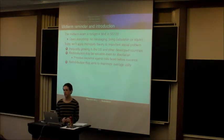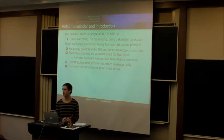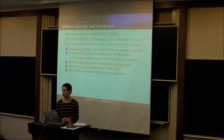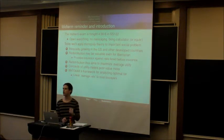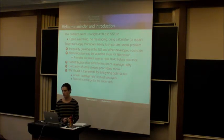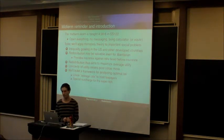Redistribution under this perspective is going to aim to maximize the average utility of people in society. Because of the concavity of utility in income, this is going to mean that the poor place a greater marginal value on a dollar. We'll use this as a framework for analyzing optimal taxation — both the optimal linear tax rate that an ordinary American should pay, as well as a special tax surcharge for people earning above a million dollars, which is something the Obama administration has been proposing.